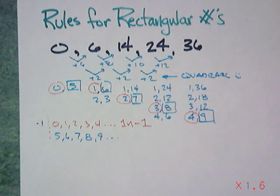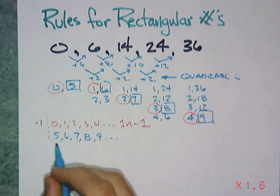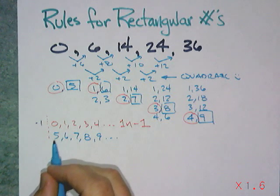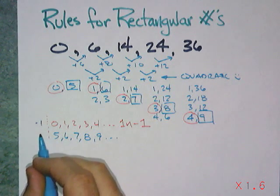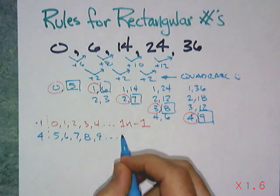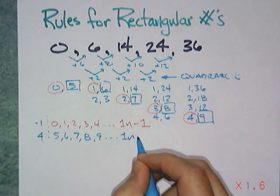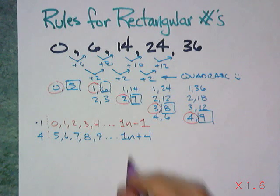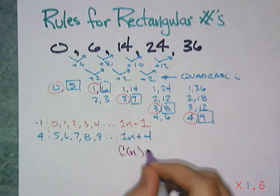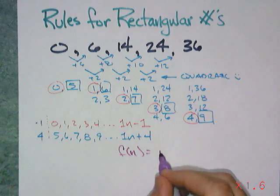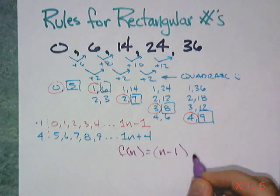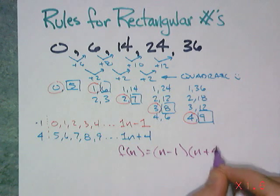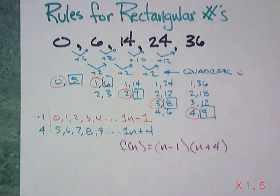For the other sequence, it would be 5, 6, 7, 8, 9. And that's a constant difference of 1 starting at 5. But the 0 term would be 4. So that's 1n plus 4. So this rectangular sequence could be written as f(n) is equal to (n minus 1) times (n plus 4).